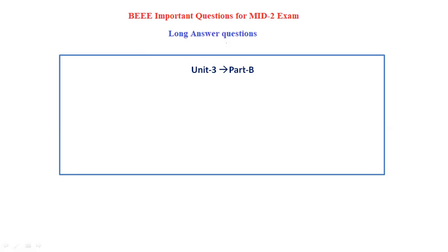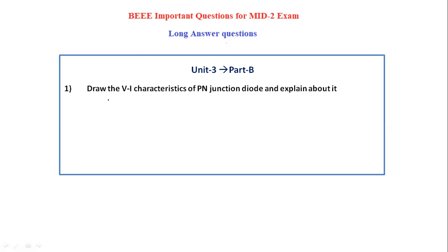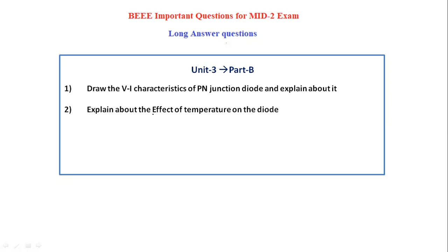In unit 3 part B, you have to concentrate on this topic: draw the VI characteristics of the PN junction diode and explain about it. In this question, you have to draw the VI characteristics and explain about the forward bias and reverse bias characteristics, as well as provide an introduction to the PN junction diode. Next, explain about the effect of temperature on the diode — if the temperature increases, what will happen to the diode.